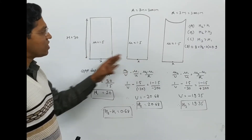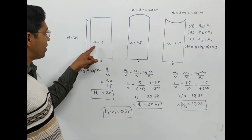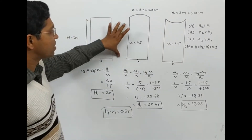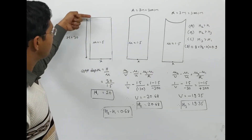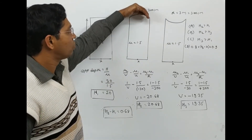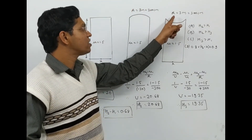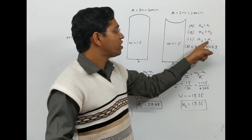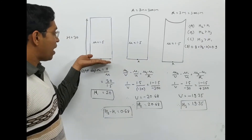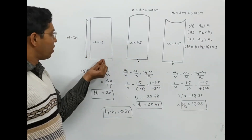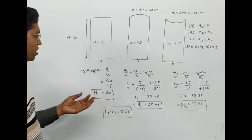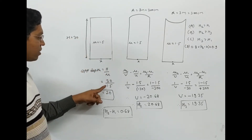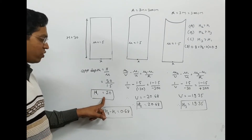Three glass cylinders are kept as shown, each with refractive index 1.5 and depth 30 cm. The first has a flat top surface, the second has a convex surface, and the third has a concave surface — both curved ones having radius 300 cm. We find the apparent depths h1, h2, h3 of point X. For the flat surface, apparent depth = h/mu = 30/1.5 = 20 cm, so h1 = 20 cm.